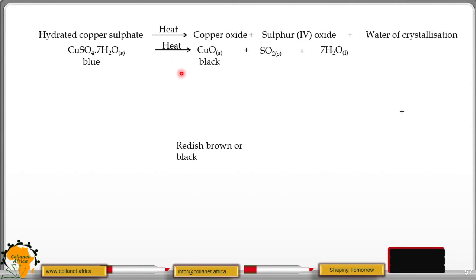Then we have the hydrated copper(II) sulfate. If you heat the hydrated copper(II) sulfate, it's blue in color, you get a black residue, which is copper(II) oxide, plus sulfur(IV) oxide, plus water.